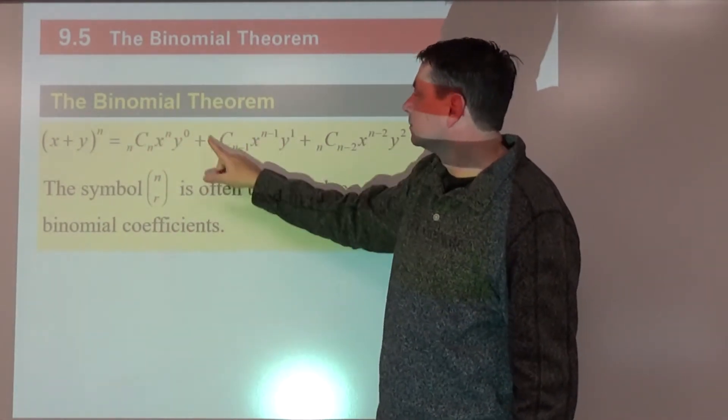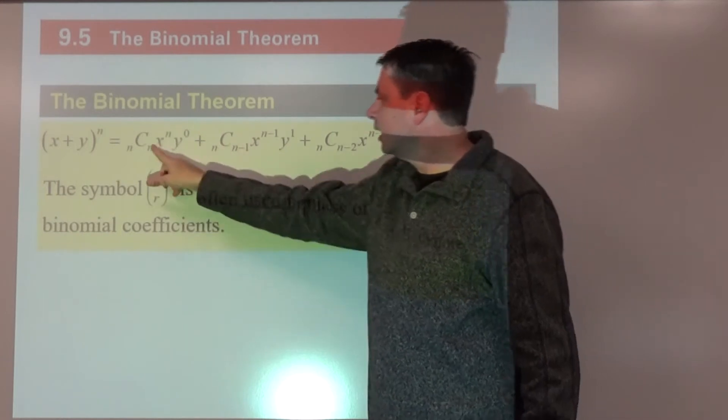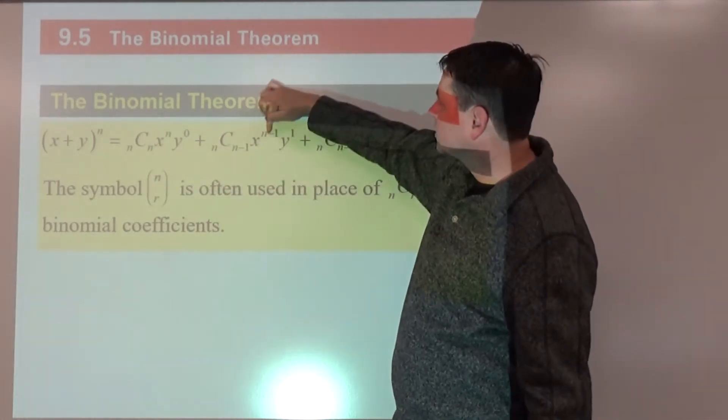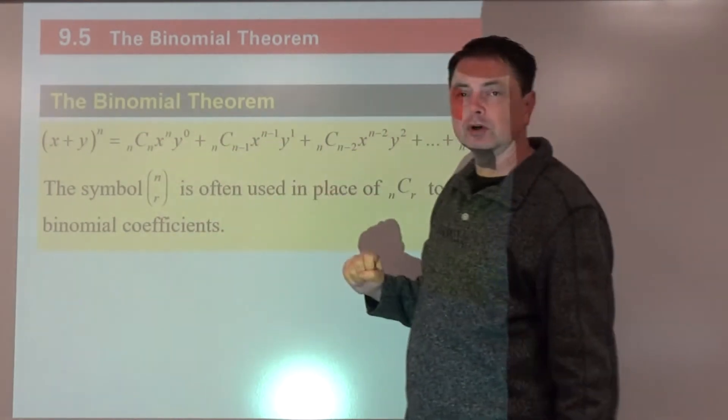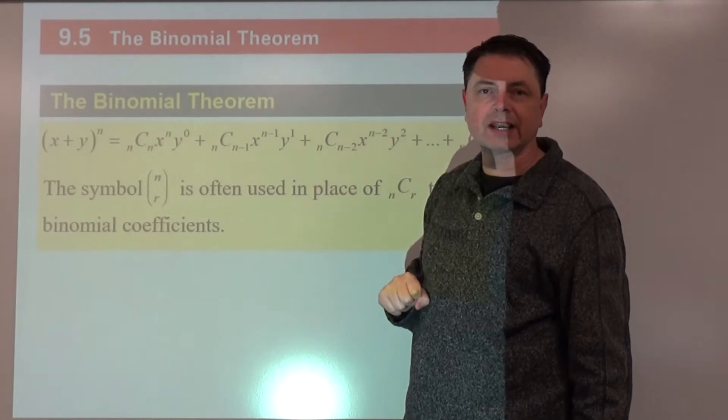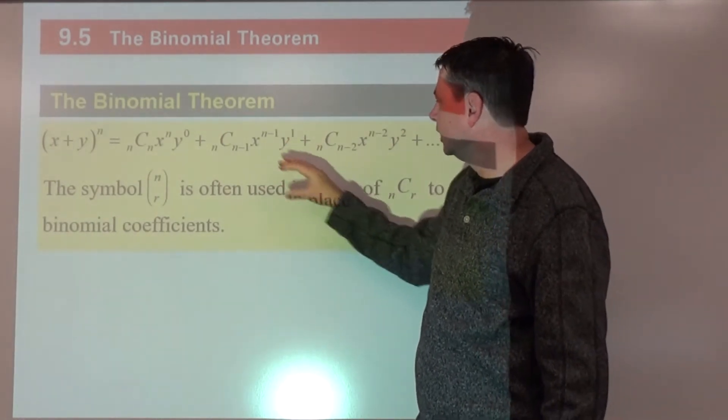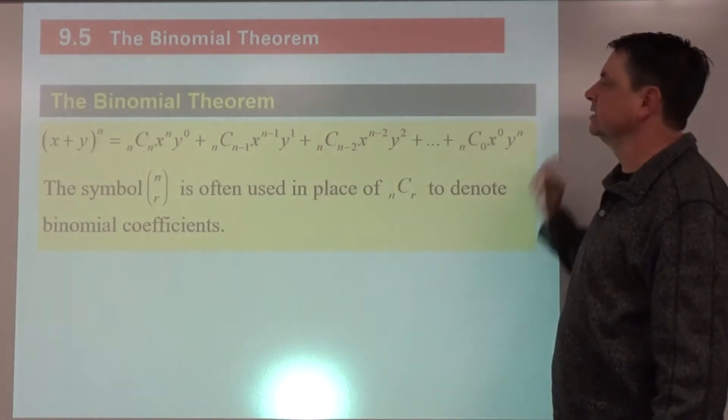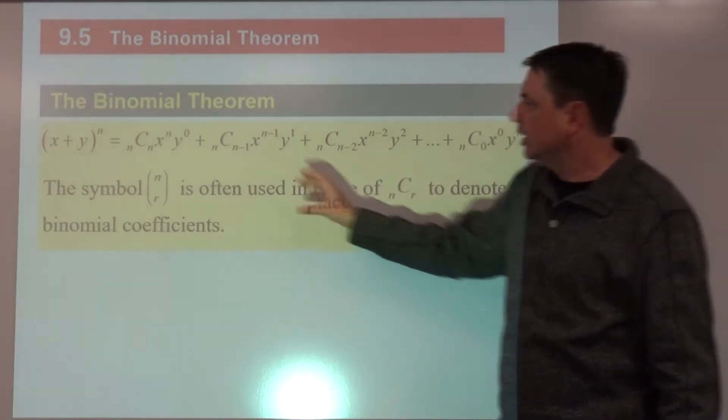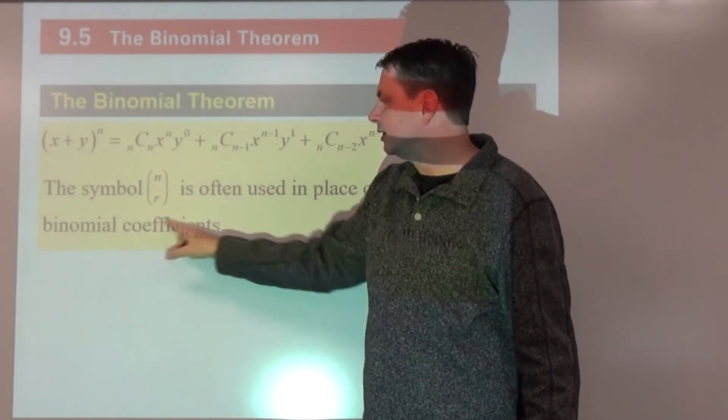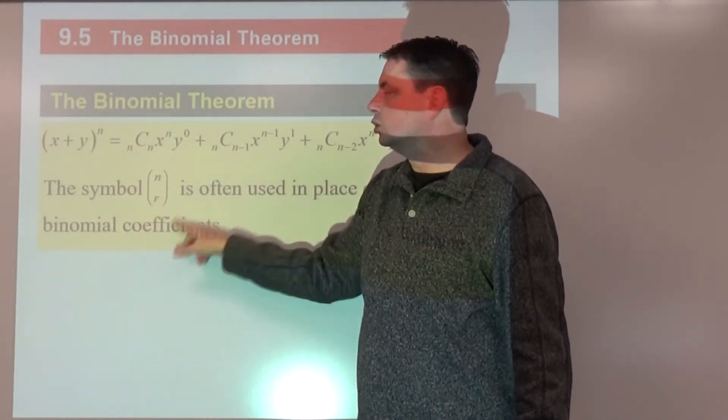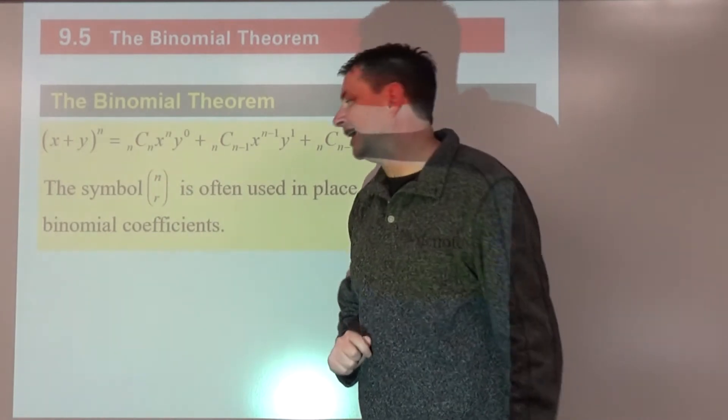And then the next one over, we're going to add to that n choose n minus 1, and then the number that we're choosing here drops by one. The exponent for the a part, the first term, drops by one, whereas the exponent for the second part, the b part, goes up by one, and so on. And that continues the pattern. So this is a combination. You will sometimes see this notation, it's a little bit older notation used to represent combination as well.